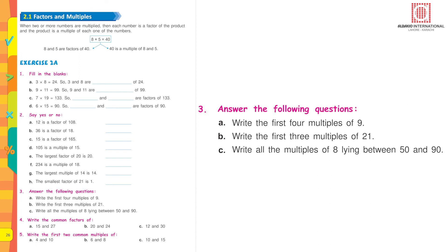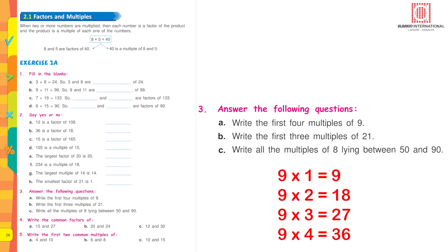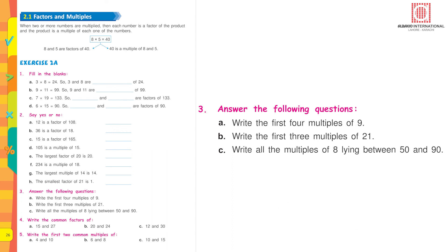Answer the following questions. Write the first 4 multiples of 9. Just count the 9 times table up to 4: 9 × 1 = 9, 9 × 2 = 18, 9 × 3 = 27, 9 × 4 = 36. So 9, 18, 27, and 36 are the first 4 multiples of 9.